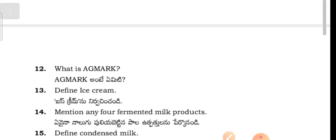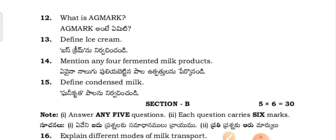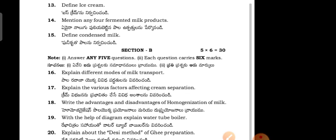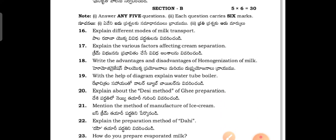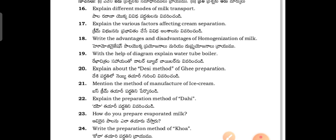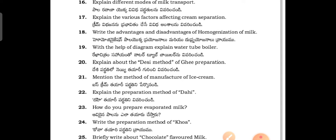What is toned and double toned milk? What are the different types of packing? What is cream? What is AGMARK? What are the different types of ice cream? Mention any four fermented milk products. What is condensed milk? Now moving to Section B - they have given ten questions, out of ten answer any five. Explain the different modes of milk transport. Explain the various factors affecting cream separation. Explain the advantages and disadvantages of homogenization of milk.